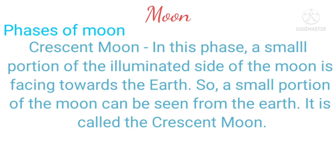The crescent moon: in this phase, a small portion of the illuminated side of the moon is facing towards the earth. So a small portion of the moon can be seen from the earth. This is called the crescent moon.